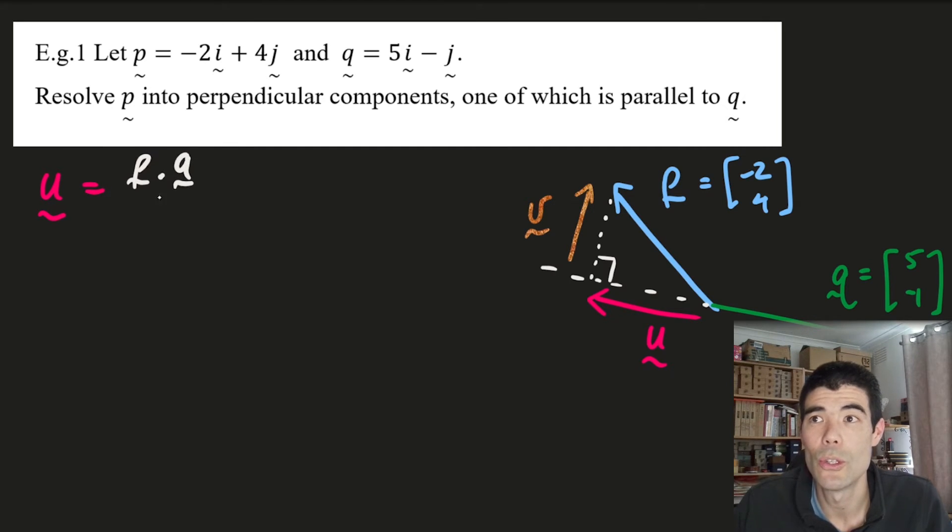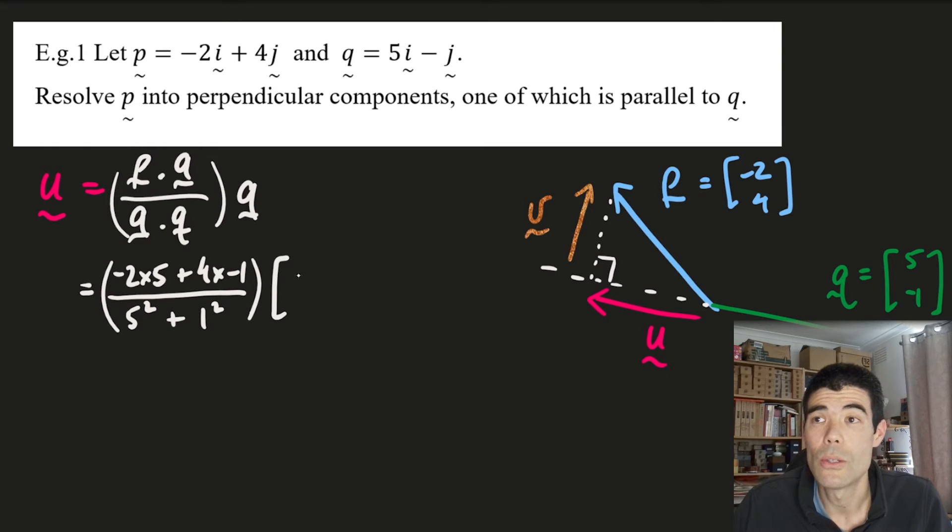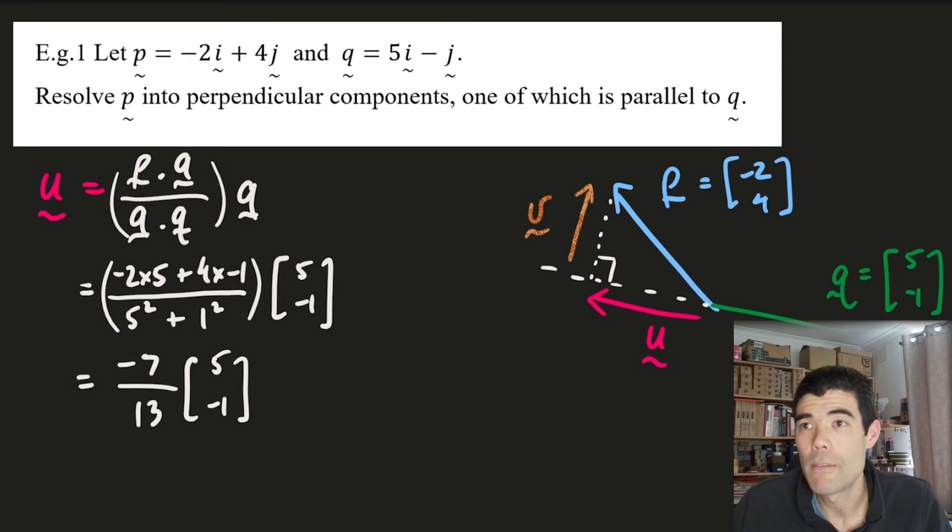So to apply our formula, p dot q over q dot q times vector q. We calculate dot product by multiplying components and then adding. So negative two times five plus four times negative one. For q dot q, we'll have five squared plus negative one squared, all multiplied by the vector q. So this is giving us a vector, negative 14 over 26 times vector q. We can simplify that down to negative seven over 13. And if we look at the diagram, it looks roughly right. We're going in the opposite direction of q, that's why we have a negative, but we're not going as far. Seven thirteenths. We're going seven thirteenths of the length of q in the opposite direction.